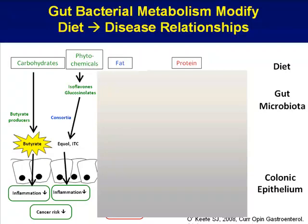Another example are the glucosinolates in cruciferous vegetables. Among all vegetables evaluated for potential chemopreventive effects, cruciferous vegetables such as broccoli, cauliflower, and cabbage have really been the ones that keep standing out. The glucosinolates as they exist in plant food are not biologically active and have to undergo hydrolysis — removal of the carbohydrate moiety — to allow for production of a bioactive compound, the isothiocyanates. The bacteria play an important role in this.